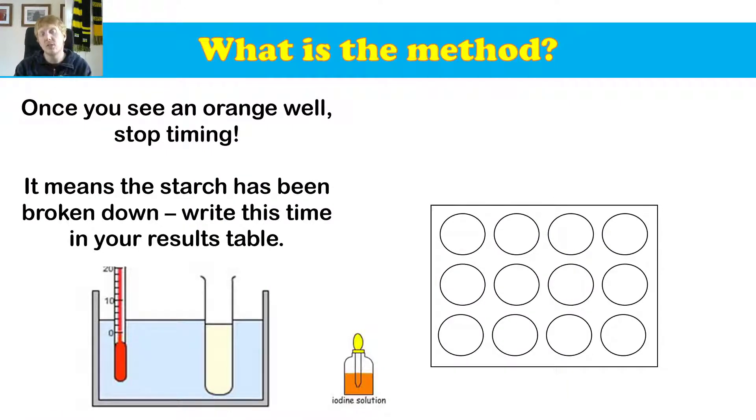Let me show this to you a little bit more visually. So once we see an orange well, we're going to stop timing. It means the starch has been broken down, and we're going to write these results in our table. So let's have a look how this works. At zero seconds, we're going to put some iodine on our tile. And we're just going to put iodine across all of the tiles. So we're going to drip it, drop it, and we're just going to put it along the hole. So every tile has iodine on it.